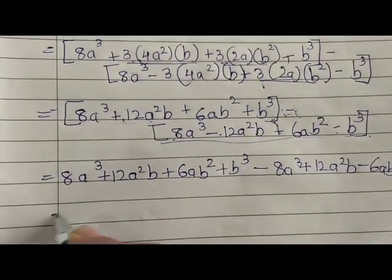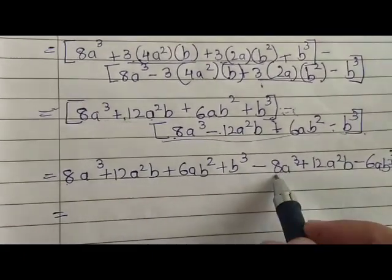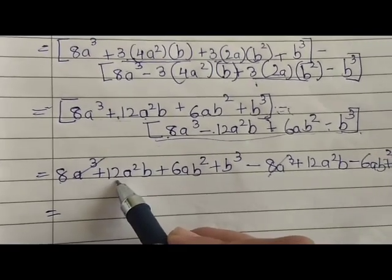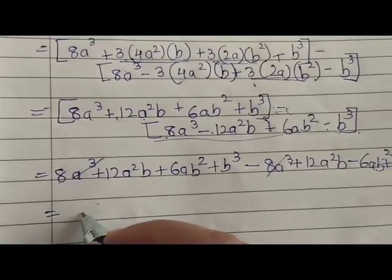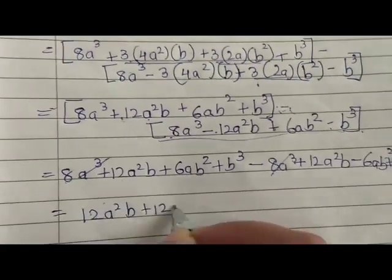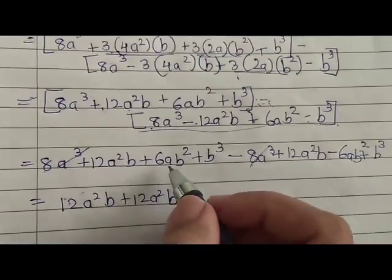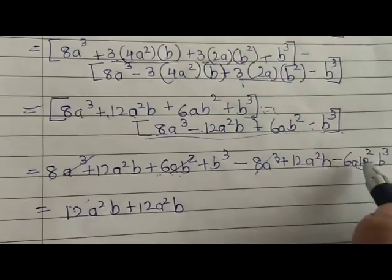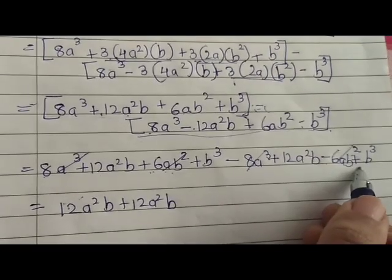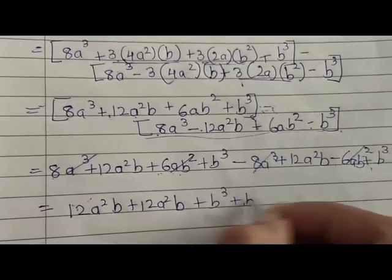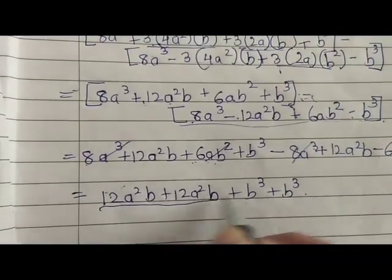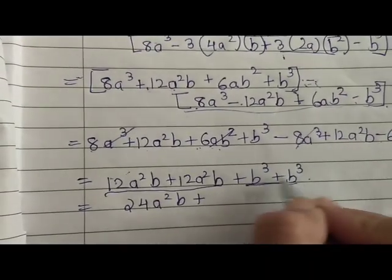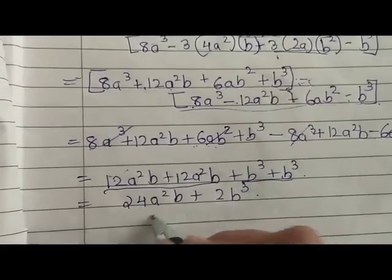After opening the bracket: we have +8a³ and -8a³ — opposite signs, so they cancel. We have +12a²b and +12a²b — same sign, so we add them: 12 + 12 = 24a²b. We have +6ab² and -6ab² — opposite signs, so they cancel. We have +b³ and +b³ — same sign, so we add them: 2b³. The final answer is 24a²b + 2b³.